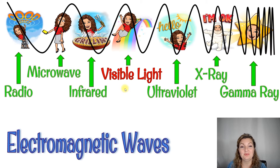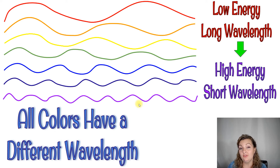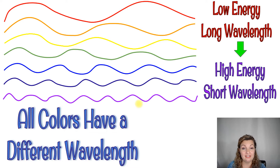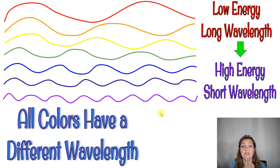ROYGBIV — in other words, the red, orange, yellow, green, blue, indigo, and violet colors that humans can actually see. Now, every color has its own wavelength, very unique. You can see they're all different. The reds, oranges, and yellows are going to be lower energy with longer wavelengths, and the blues, indigos, and violets are going to be higher energy with shorter wavelengths. Each one is its own unique wavelength.